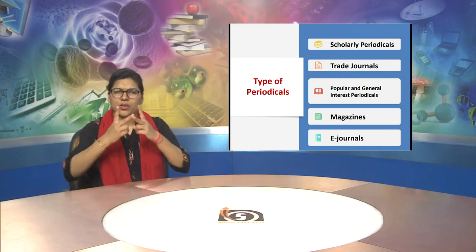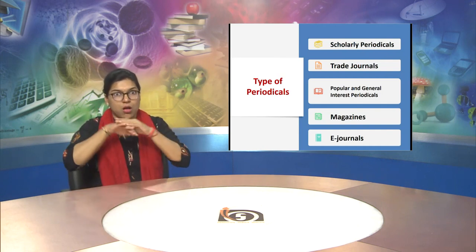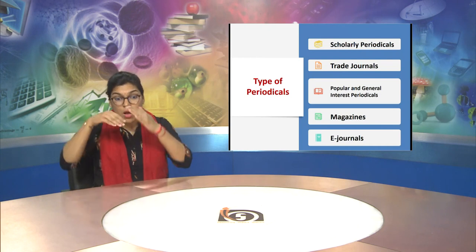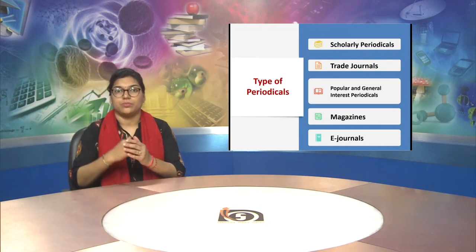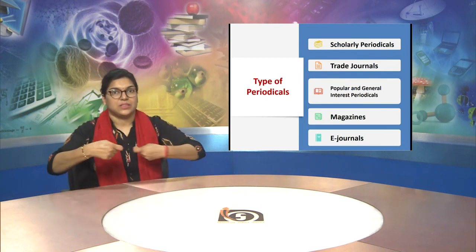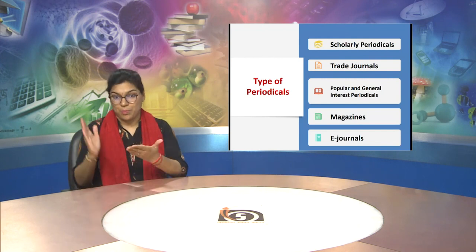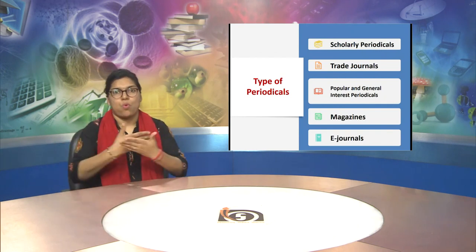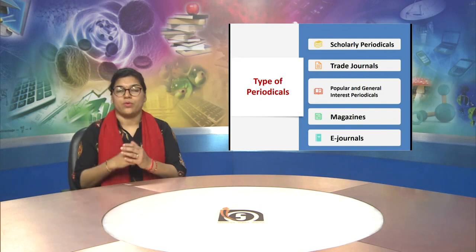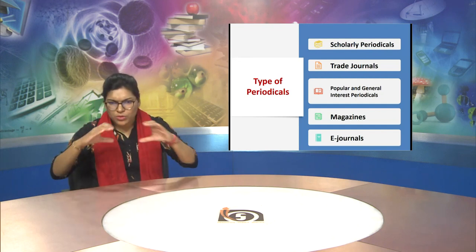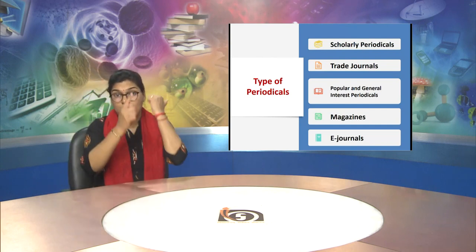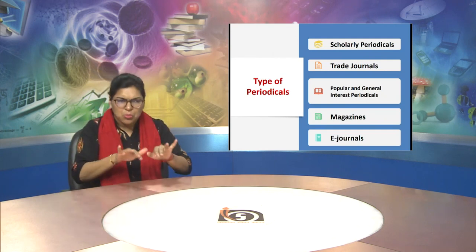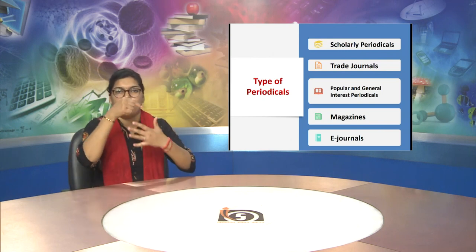Now you can see on screen the types of periodicals. There are different types of periodicals. The first one is scholarly periodicals. After that you can see trade journals. The next third option is popular and general interest periodicals. The fourth one is magazines, and the last option is e-journals. We will be learning about each in detail in the further slides.